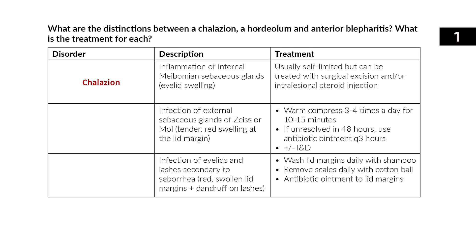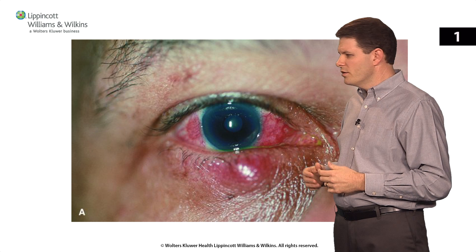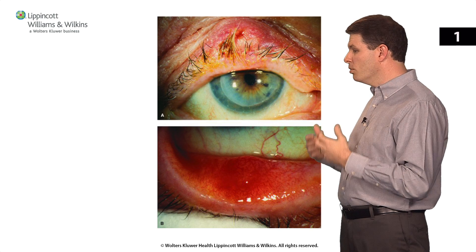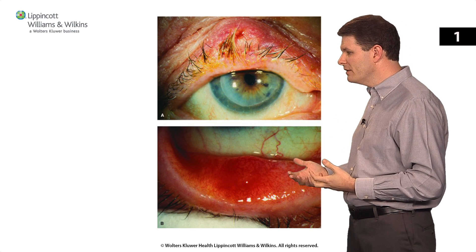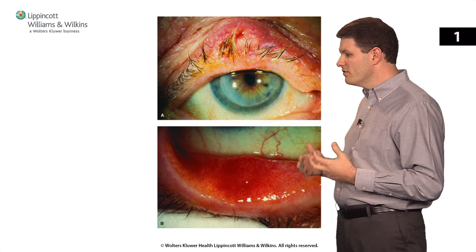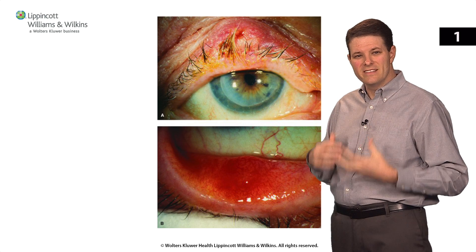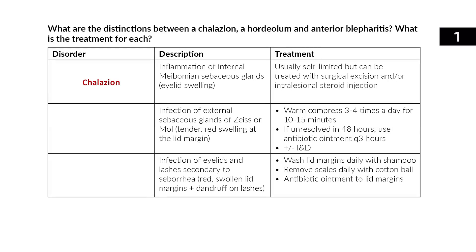Chalazion is inflammation of the internal meibomian sebaceous glands which causes eyelid swelling. The lid looks swollen, red, and inflamed, and when you pull down the lid there's redness, but the infection isn't on the mucosal surface — it's deep inside the lid. This is usually a self-limited process, but if it persists you can do a surgical excision or inject steroids into the lesion.